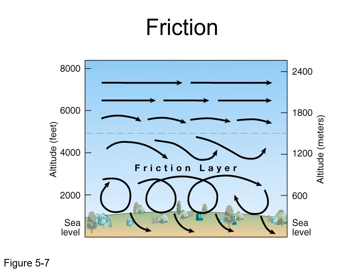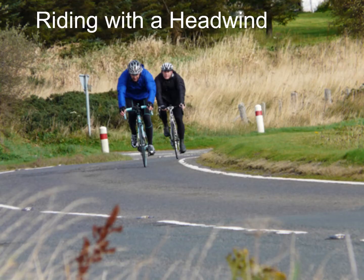Air flowing across the surface, bumping into stuff, gives a turbulent flow and slows down. Every time you see a tree bending in the wind, the wind is bending the tree and the tree is slowing the wind down. But if you go up above the surface, there's almost no friction and we have laminar flow — the air moves as fast as it possibly can. That distinction will be important when we look at surface winds and their direction. It's like riding a bicycle into the wind — you slow the wind, the wind slows you.